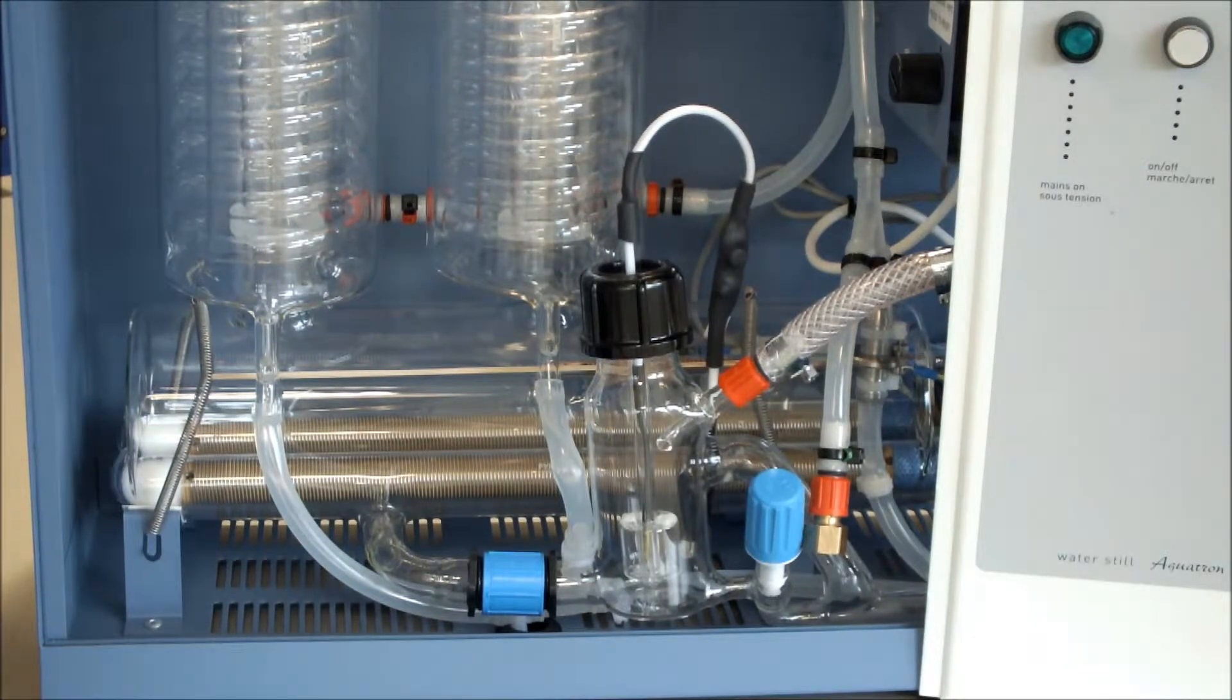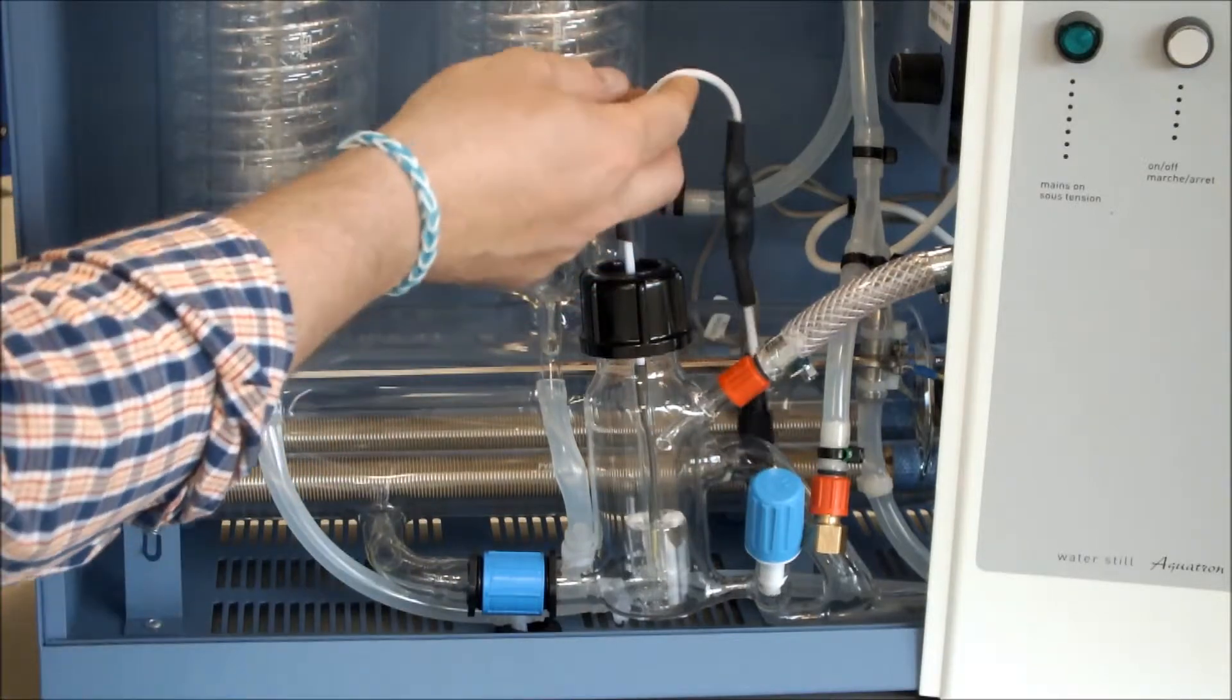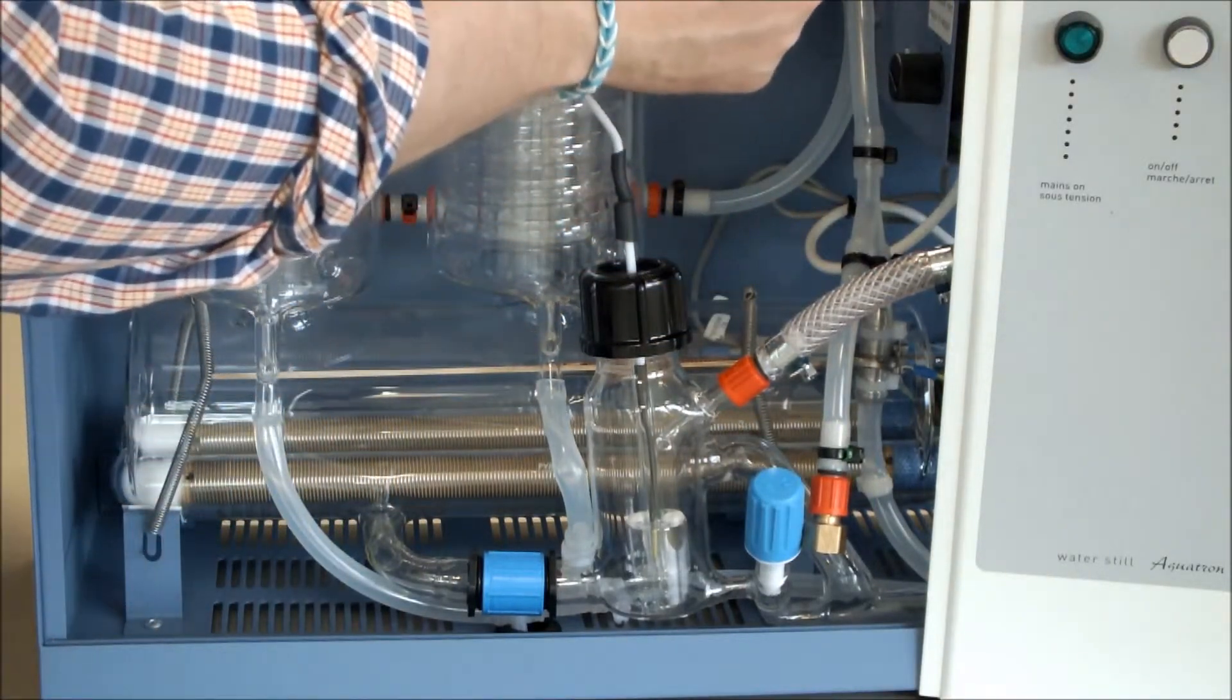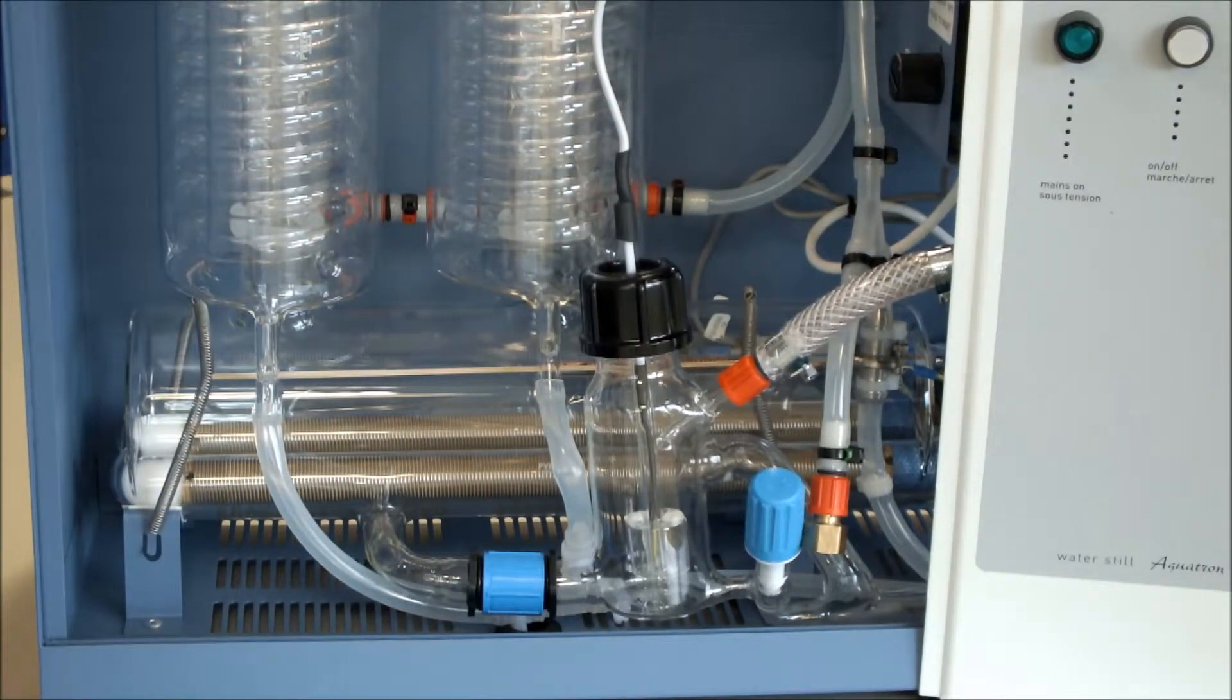We then remove the black cap from our plug, and we connect the plug from our float switch assembly into our socket, like so.